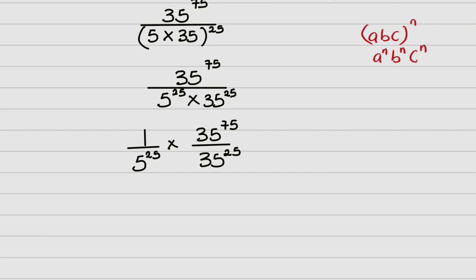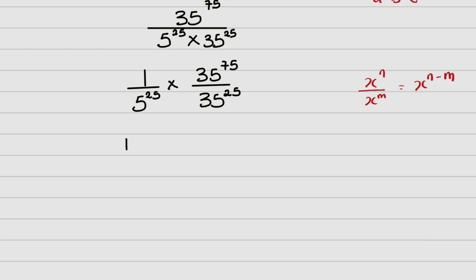Since the bases are the same — both being 35 — I can apply the quotient law: x raised to power n divided by x raised to power m becomes x raised to power (n minus m). So I have one over 5 raised to power 25, times 35 raised to power (75 minus 25).